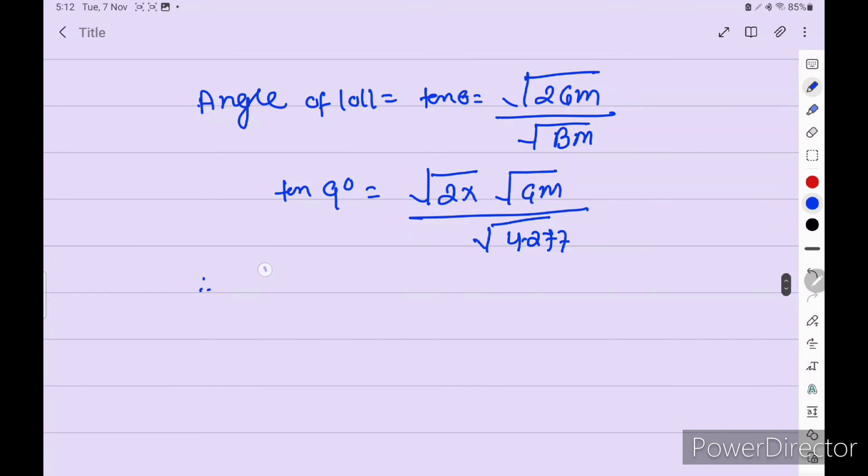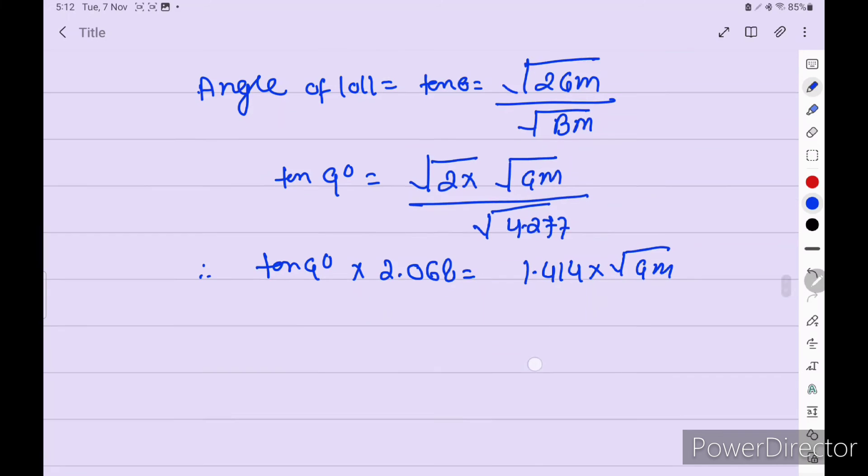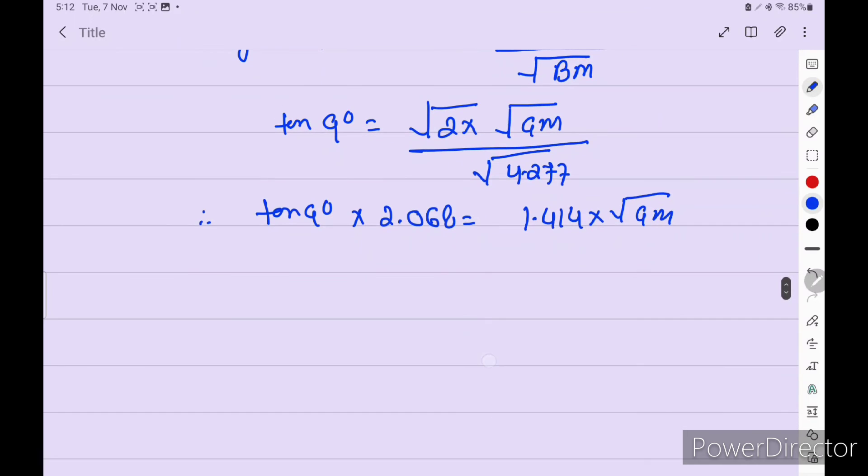Now we have to cross multiplication. Tan 9 degree is equal to 1.414 into square root GM. Okay. So this square root I will take out. Now 0.327 is equal to 1.414.